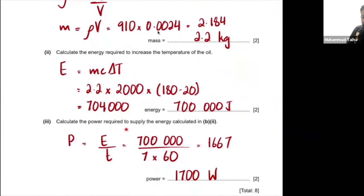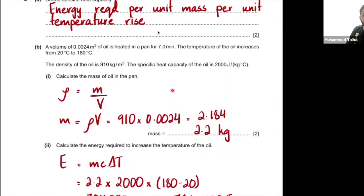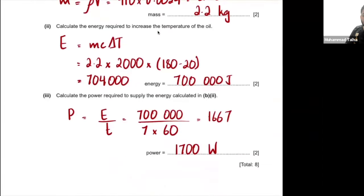Calculate the power required to supply this energy over 7 minutes. Power = energy/time. Convert 7 minutes to seconds by multiplying by 60 to get 420 s. Dividing 700,000 J by 420 s gives approximately 1,700 W. If somebody used 7 minutes as the time without converting, the answer in joules per minute would be acceptable, but writing watts with that value would be wrong.